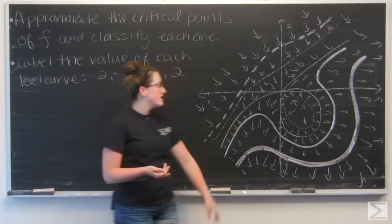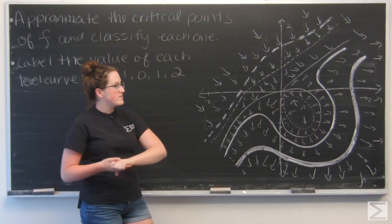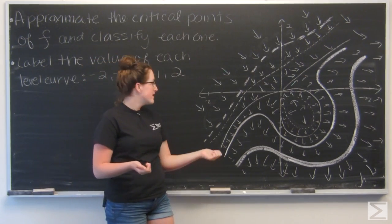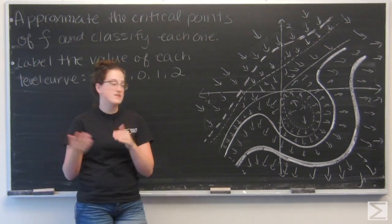In this question, we are given the vector field associated with a function f and some of its level curves. Now, we're not given any values for the level curves, but we do have different shaded lines to tell them apart.